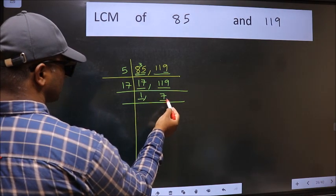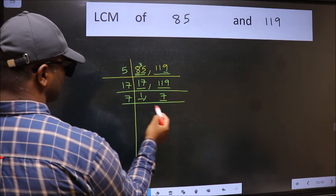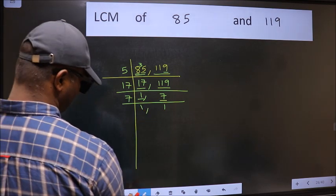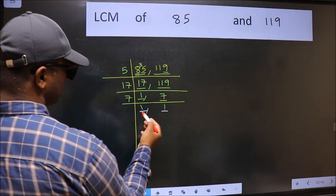Now we got 1 here. So focus on the next number 7. 7 is a prime number, so 7-1-7. So we got 1 in both the places.